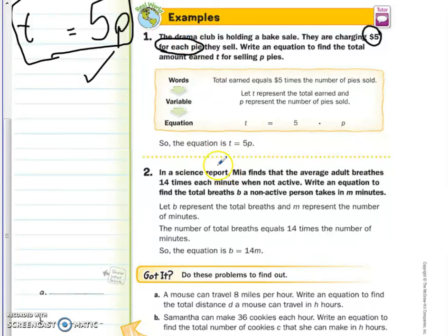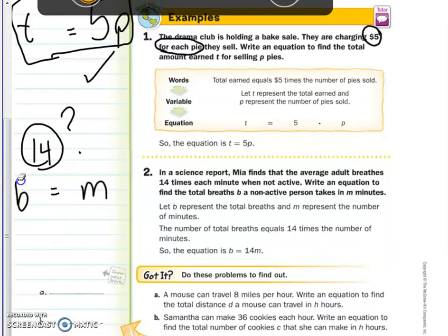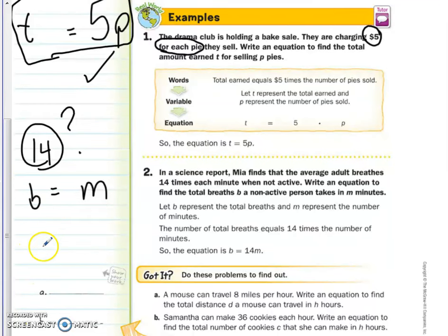Second example we have. Mia, in a science report, finds that the average adult breathes 14 times each minute when not active. Write an equation to find the total breaths B a non-active person takes in M minutes. Okay. So we know we're going to have B set equal to M, but where does this 14 go? Does it go as a coefficient to B or does it go as a coefficient to M? And let's take a closer look.